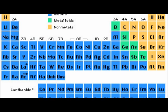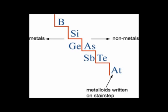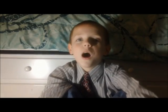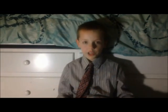Metals, non-metals, and metalloids are found on the periodic table. Metalloids are found touching the stairs. Two metals make a metallic bond. A metal and a non-metal make an ionic bond. Two non-metals make an ionic bond.